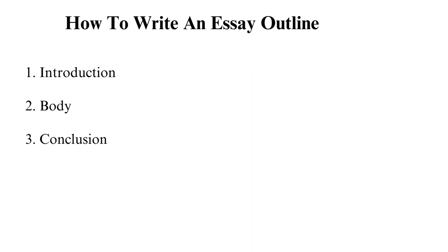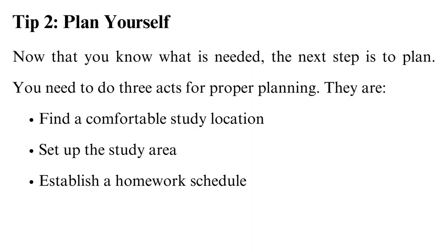Often, one presents a claim, provides evidence, explains its significance by connecting the claim to the evidence provided, and closes off with a transition sentence that concludes the paragraph while pointing to the next. 3. Conclusion. The conclusion is the final section and is usually 10% of the word count. In this section, you are supposed to wrap up your essay by repeating the main points and connecting them to the thesis. Your closing statement could be the solution to the problem, a future research suggestion, or a memorable quote that drives the reader to further thought.